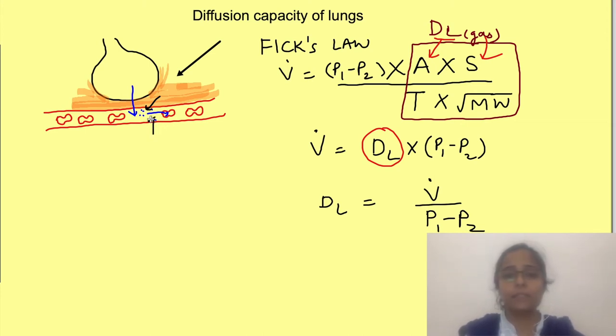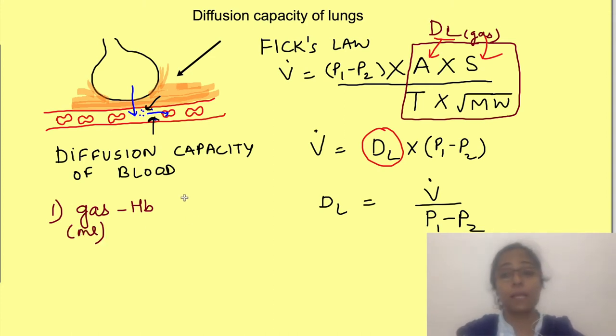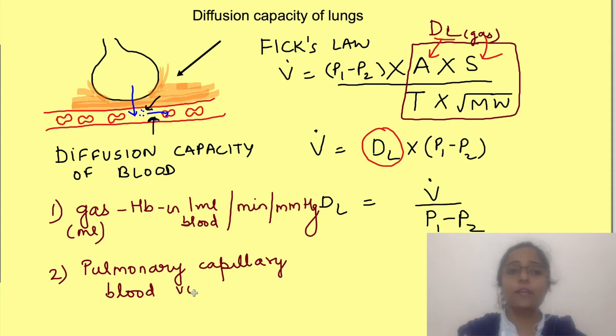Now this second parameter is known as diffusion capacity of blood which is given by rate of reaction of the gas with hemoglobin, i.e how much gas in ml combines with 1 ml of blood in 1 minute per mmHg partial pressure of gas and second the volume of capillary blood. So when rate of reaction of the gas with hemoglobin is multiplied by volume of capillary blood it gives how much gas combined with this much volume of blood per minute per mmHg partial pressure i.e diffusion capacity of blood.